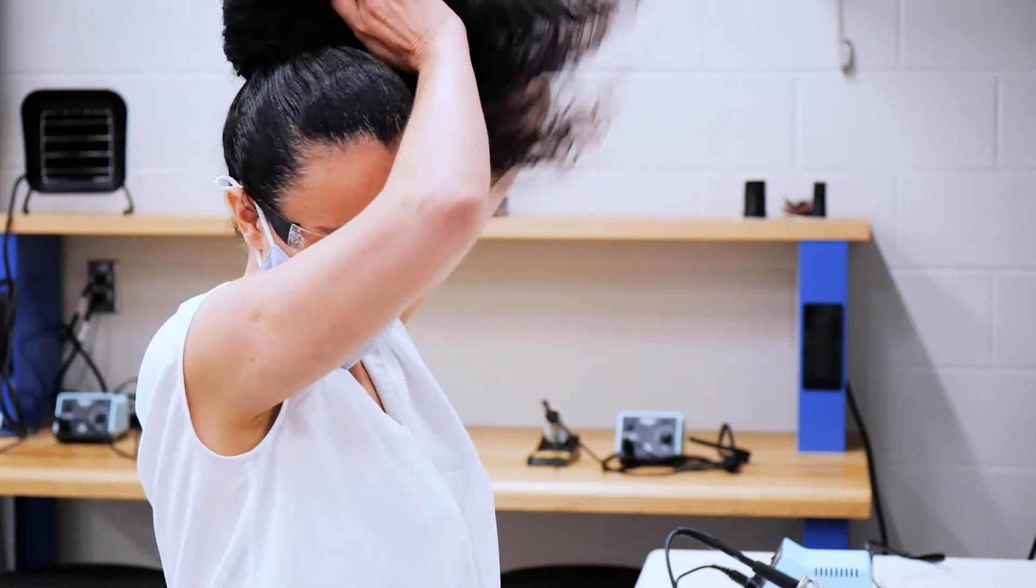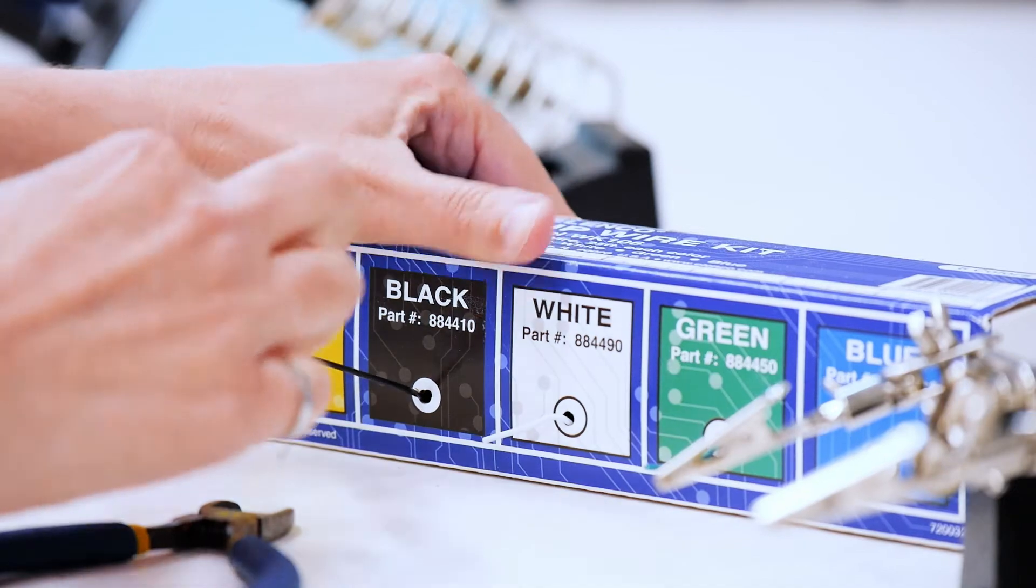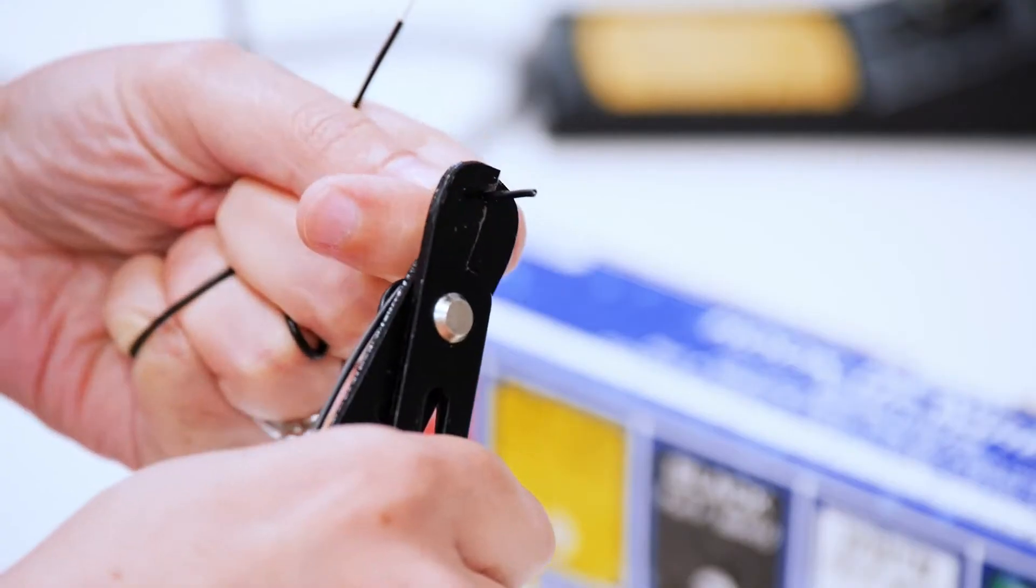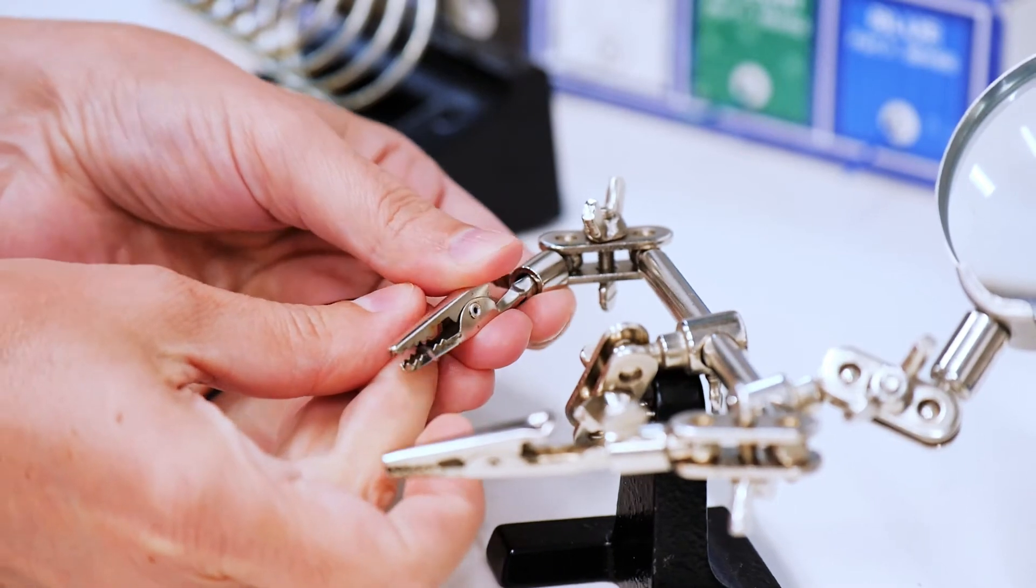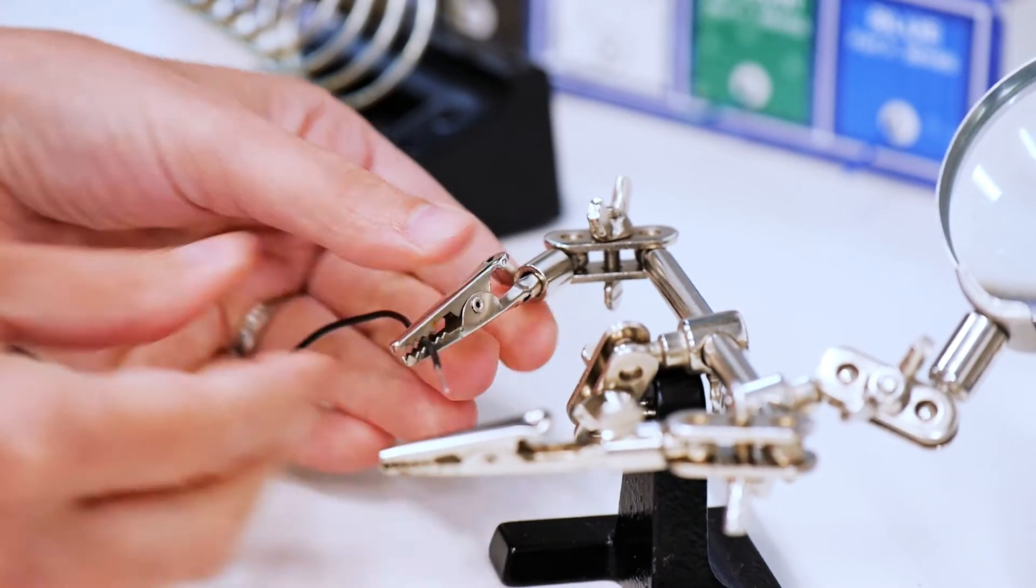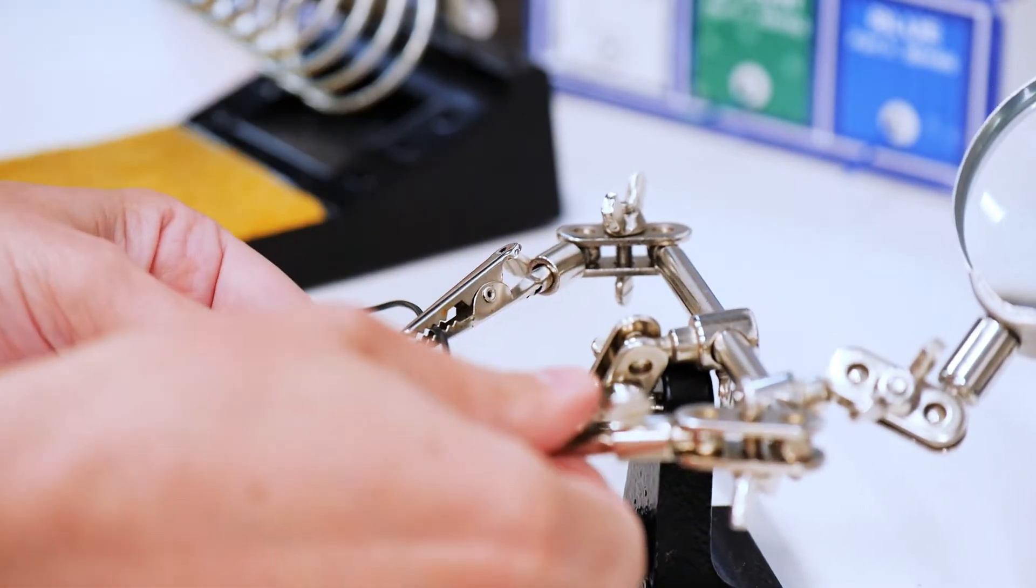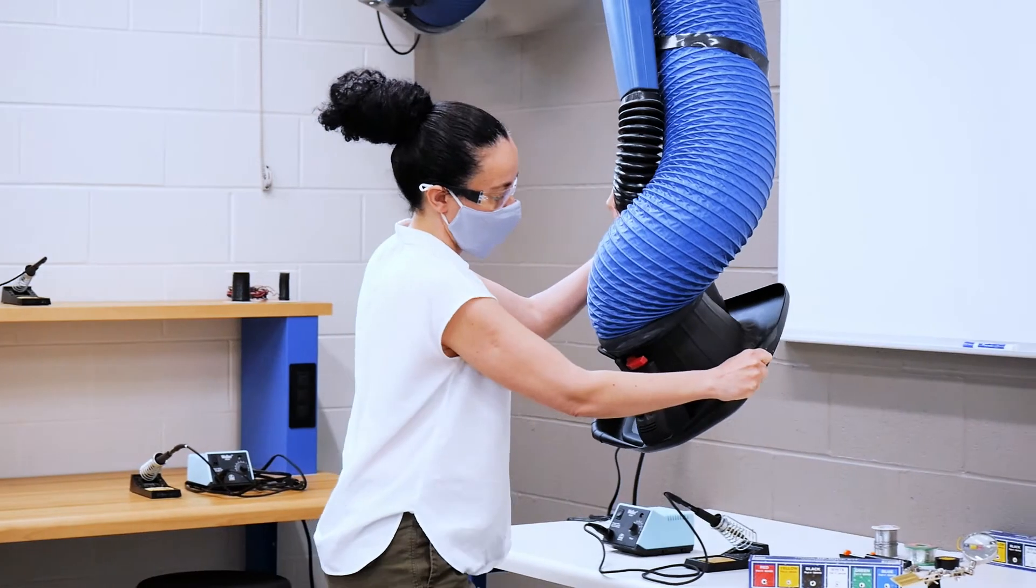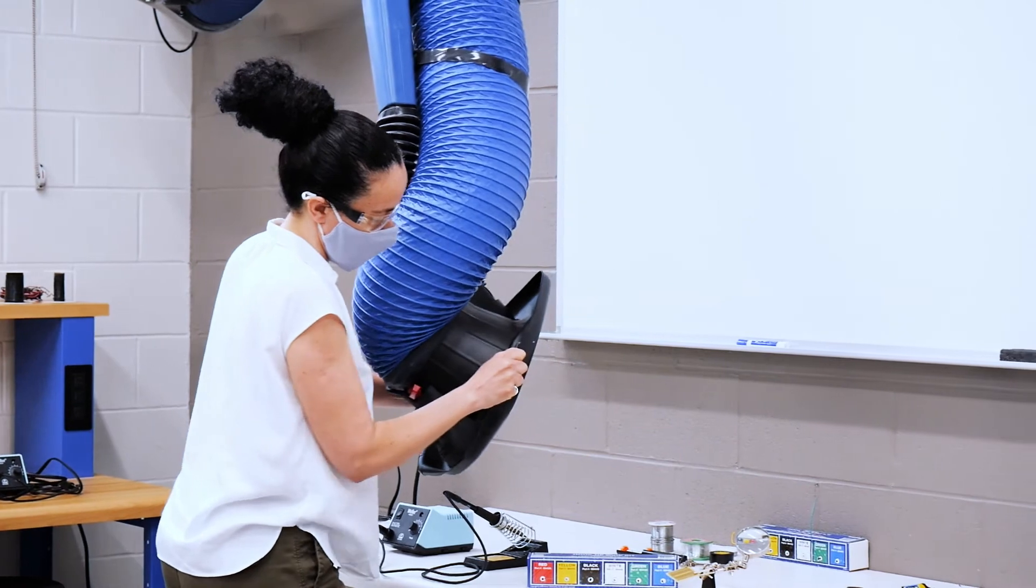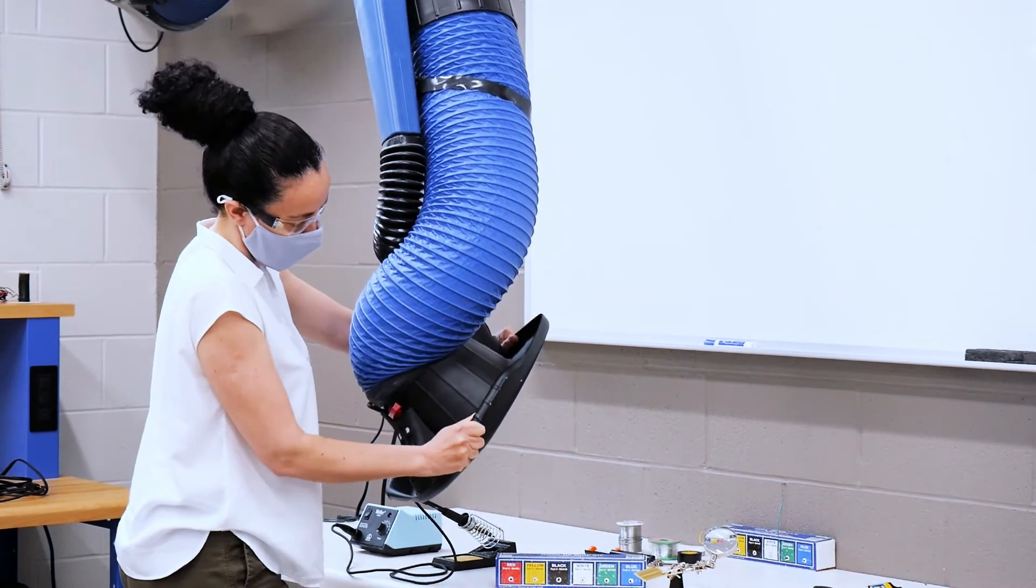Before you begin soldering put on your safety glasses and tie back any long hair or loose clothing. Prepare your components for soldering. Use the helping third hand to clip in place the components that you are going to solder together. Turn on the fume extractor system and position the inlet so that it is above and behind your workspace making sure that it will draw the fumes away from you.